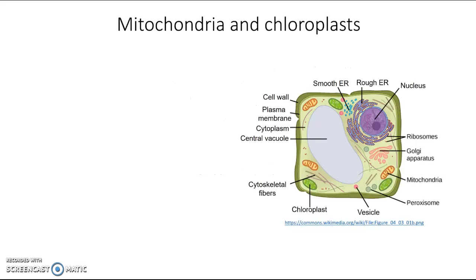If you take a look at this cell here, you can see it has a mitochondrion shown in orange, which is usually the case, and a chloroplast shown here in green, and that will also generally be shown in green.